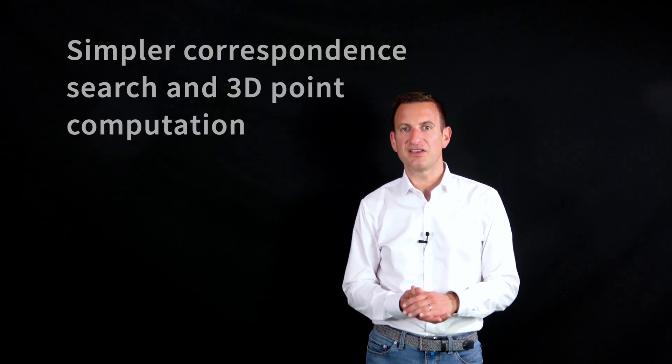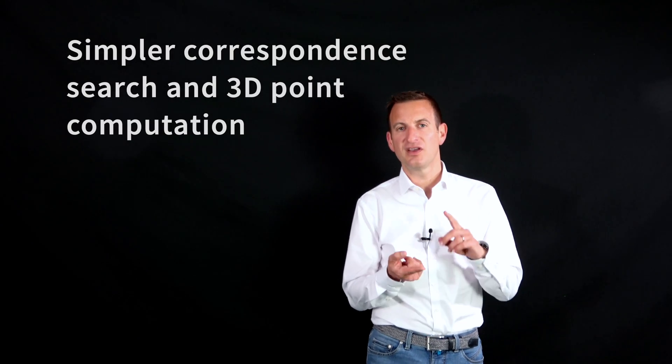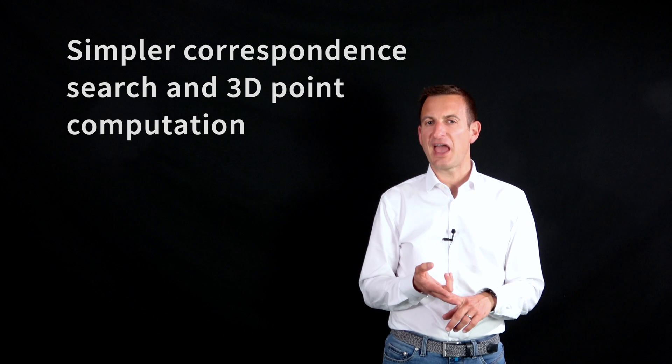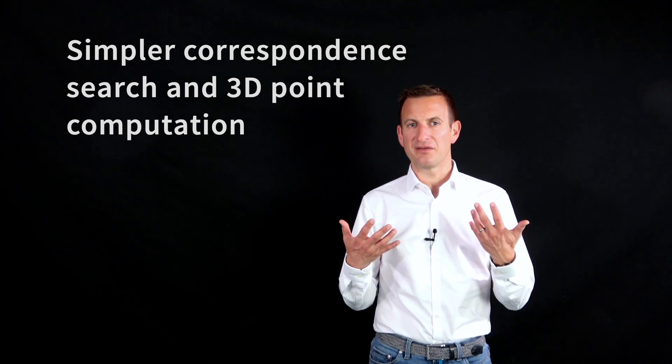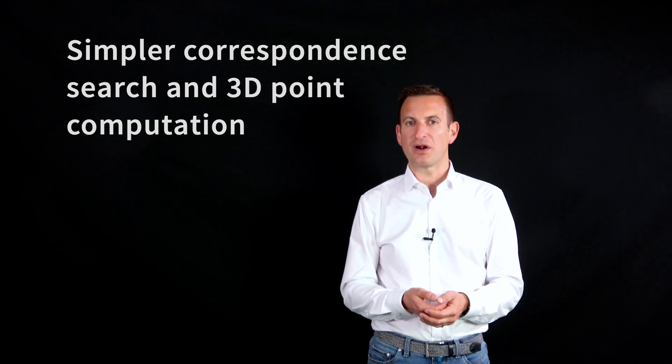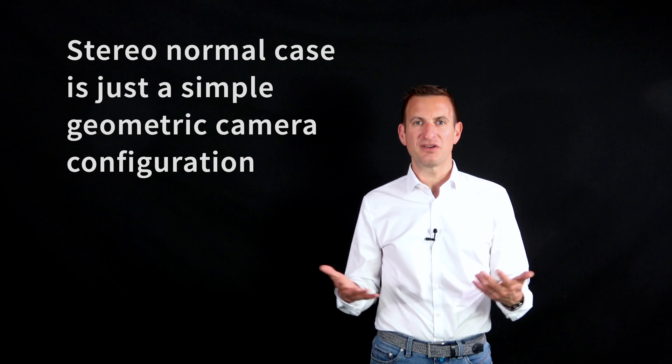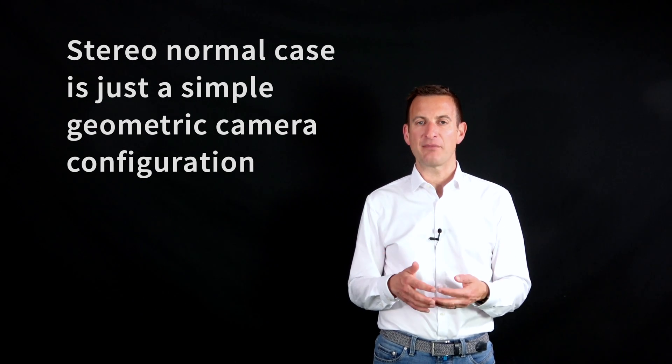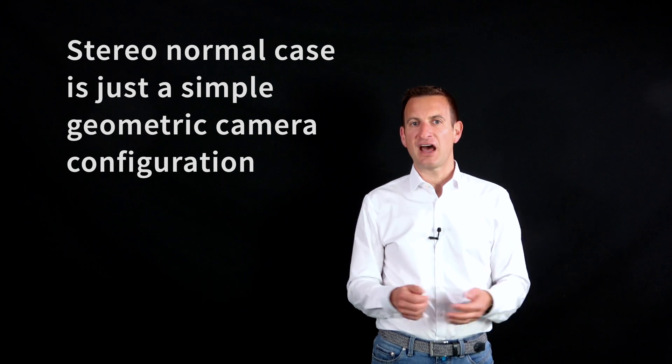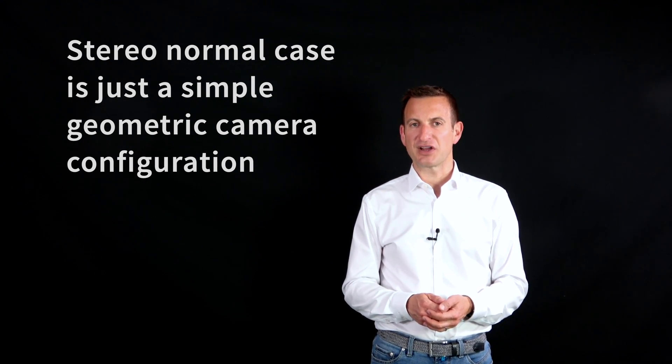So in the end, the two key things that the stereo normal case simplifies is the search for correspondences and estimating the x, y, z location of a point in the 3D world based on the fact that we are picturing it with our stereo camera. So in the end, the stereo normal case is nothing which is very fancy, it's just a very simple geometric configuration of a stereo camera which simplifies key tasks that we do in stereo reconstruction. So I hope that was useful. Thank you very much for your attention.